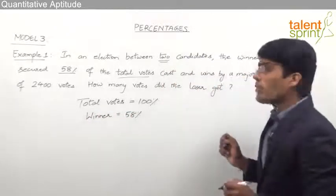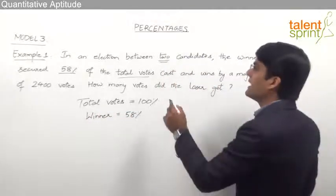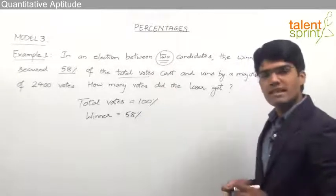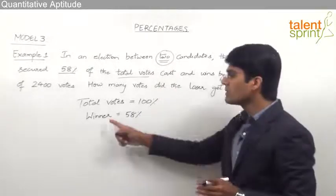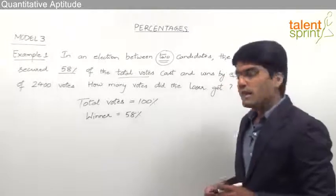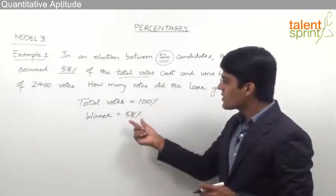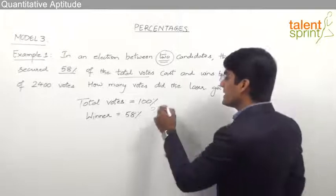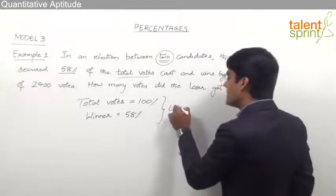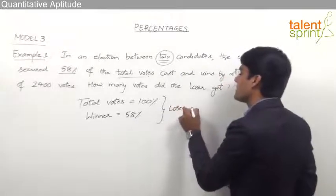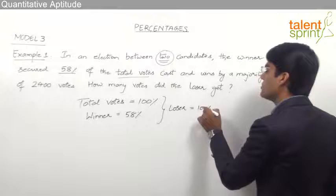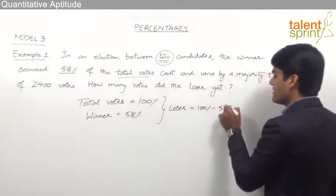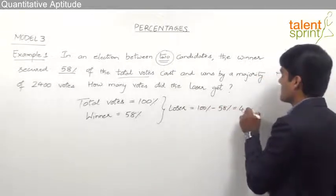The most important point here is that the election is between two candidates, so each of the votes will either go to the winner or the loser. Since the winner has got 58% of the votes, the loser will get the remaining percentage — that is 100% minus 58%, which equals 42%.